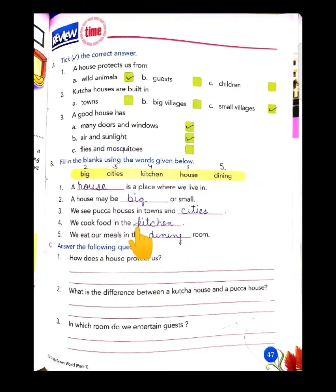We cook food in the kitchen. We eat our meals in the dining room, where the dining table is. We eat our meals in the dining room.